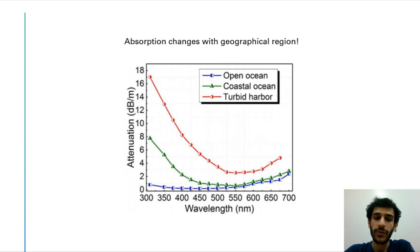This second graph shows how the attenuation varies with wavelength for different geographical regions. So the difference between these regions is the amount of particles that are in the water. Open ocean has the minimum amount of particles meaning it's more clear and therefore we have the least attenuation level. Whereas in the turbid harbor we have the max amounts between these three regions of particles and therefore it has high attenuation level.